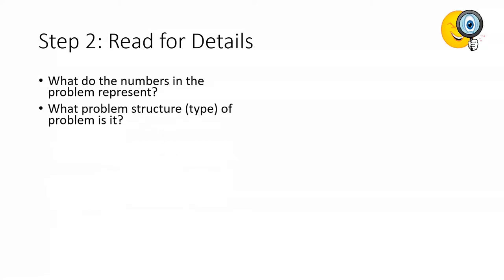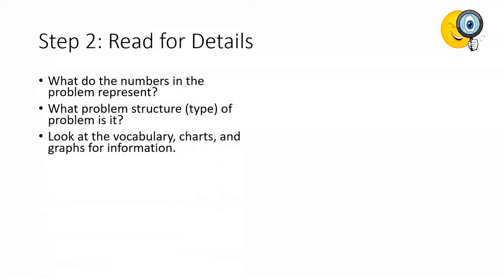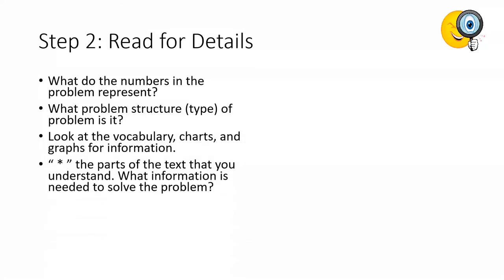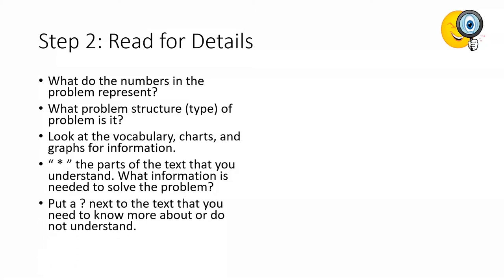Next, we are going to reread the problem, and this time we are going to reread it to pay attention to the details. First, we are going to think about the numbers in the problem and what they represent. Next, we are going to think about the problem structure or type — what type of mathematics will we need to do in order to answer our questions? We will look for important vocabulary, charts, or graphs that will provide us with information to help us solve our problem. We will also pay attention to details by putting a star, underlining, or marking parts of the text, and putting question marks next to text we might need to know more about.